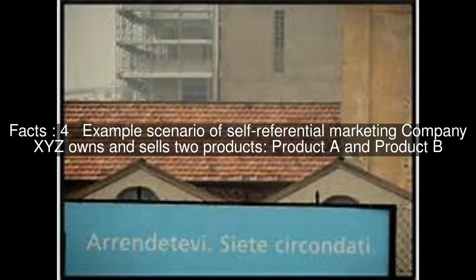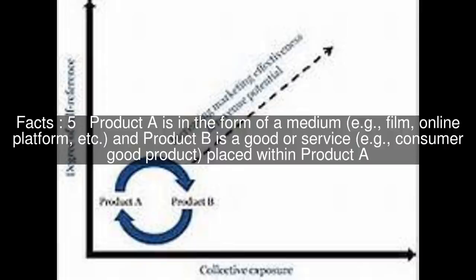Example scenario of self-referential marketing: Company XYZ owns and sells two products, Product A and Product B. Product A is in the form of a medium — e.g., film, online platform, etc. — and Product B is a good or service, e.g., a consumer good product, placed within Product A.